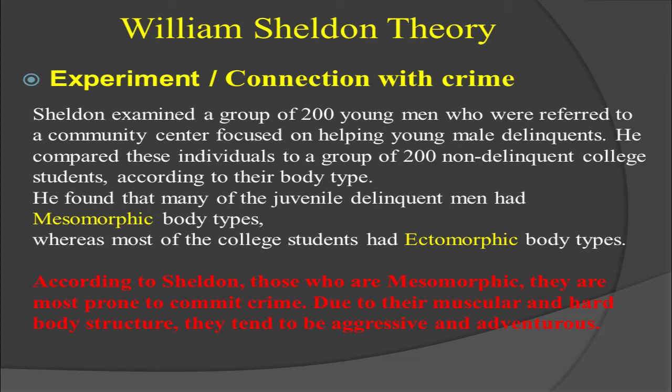He compared these individuals to a group of 200 non-delinquent college students according to their body type. So William Sheldon had 200 delinquents and 200 non-delinquents, and he compared their body structures. 'Delinquents' is also used for juvenile offenders, meaning these were juvenile delinquents.